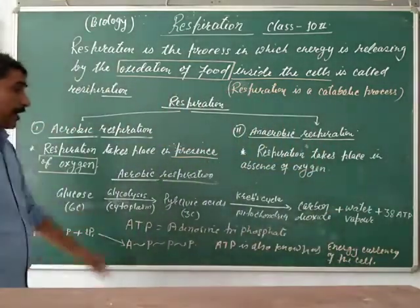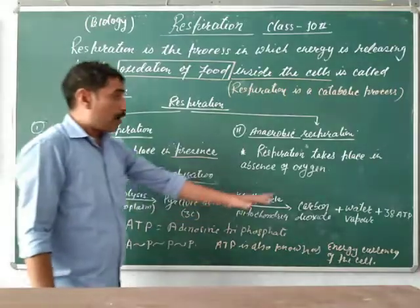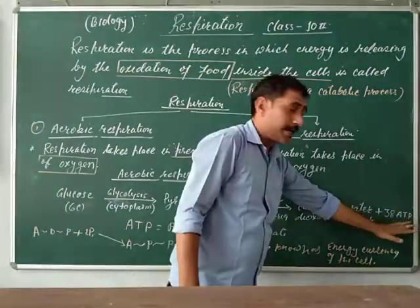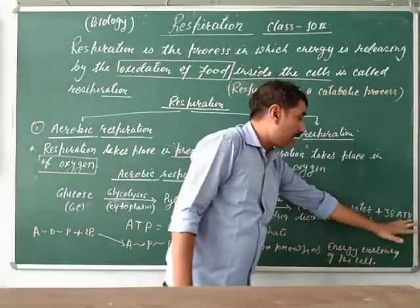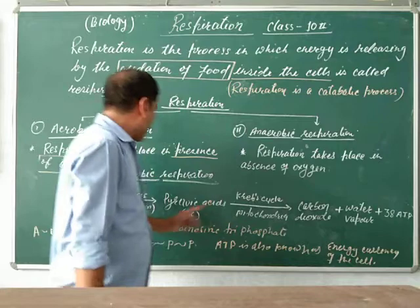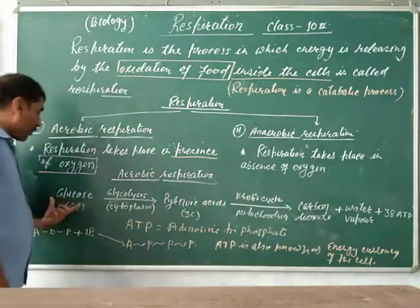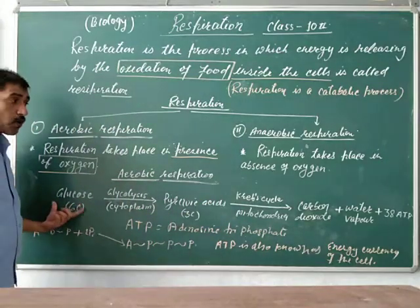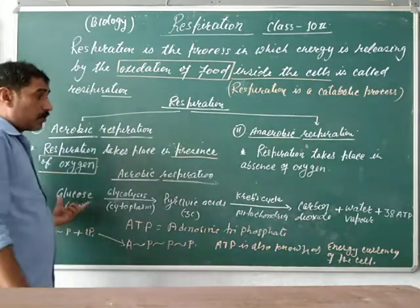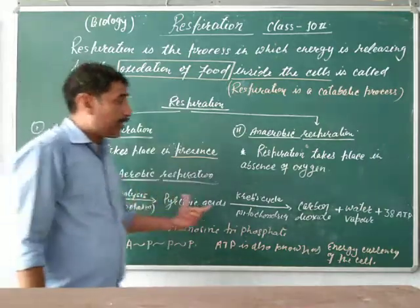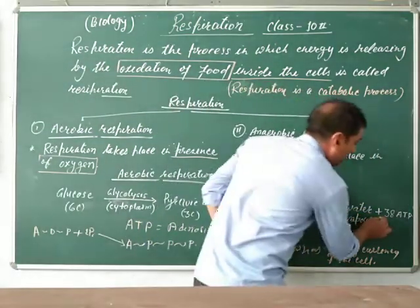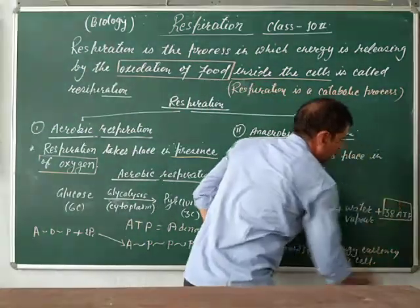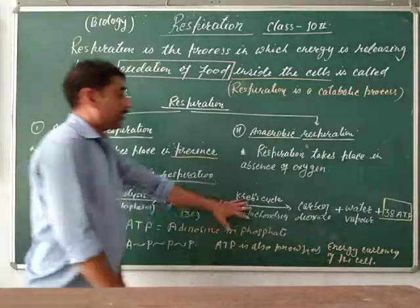All the energy is stored in the form of ATP. One molecule of glucose completely broken down gives 38 ATP molecules. This is aerobic respiration.